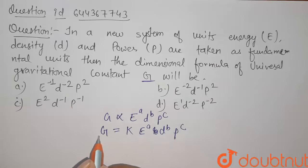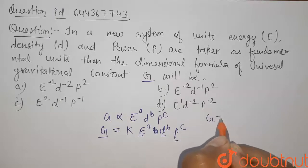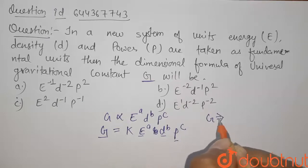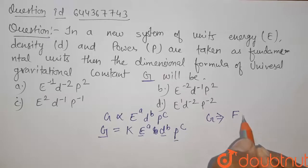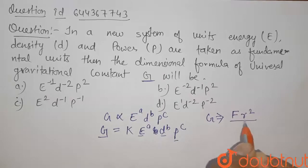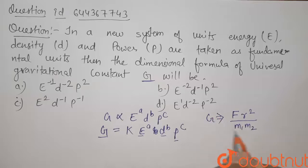So first of all, let us find the dimensions of G, E, D and P. So G is gravitational constant. It is given by force into R square divided by M1 into M2. We have find this from the gravitational force formula.